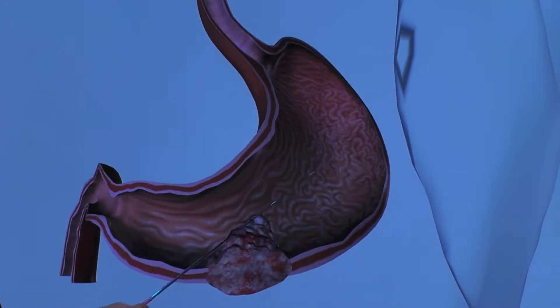A normal stomach on endoscopy you're gonna see nice pink mucosa, these rugae that kind of have nice swirls.